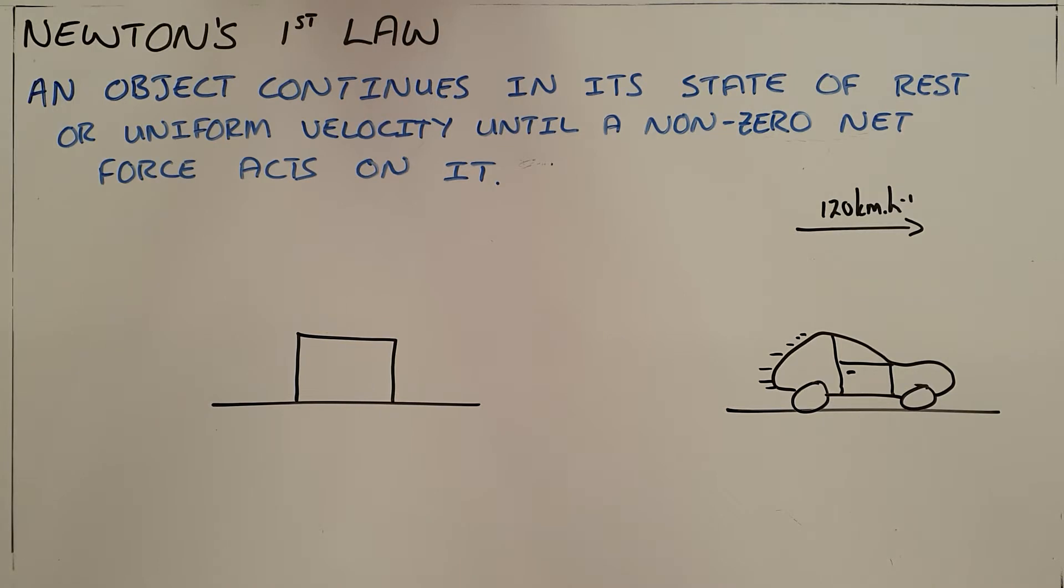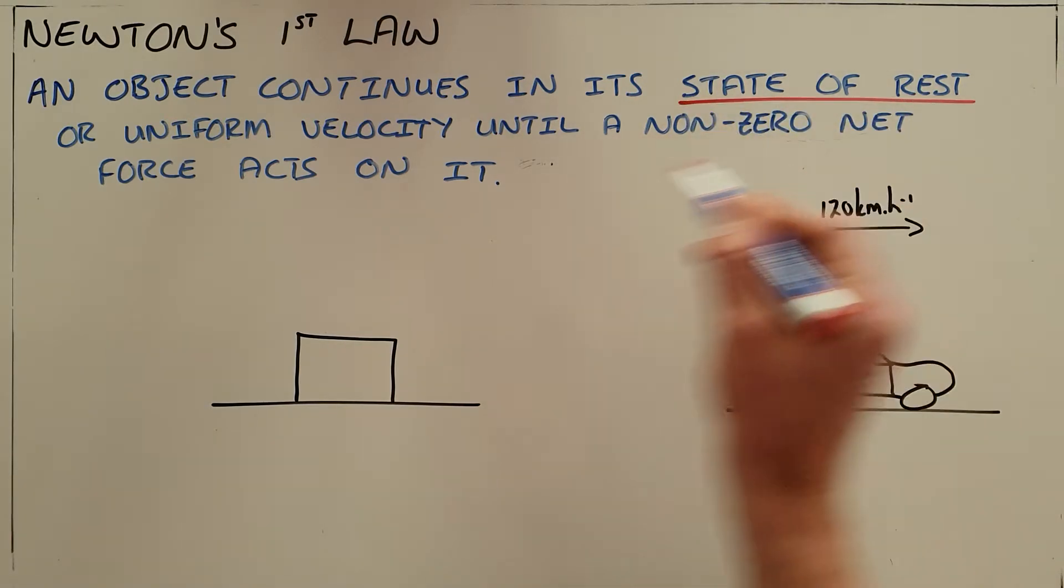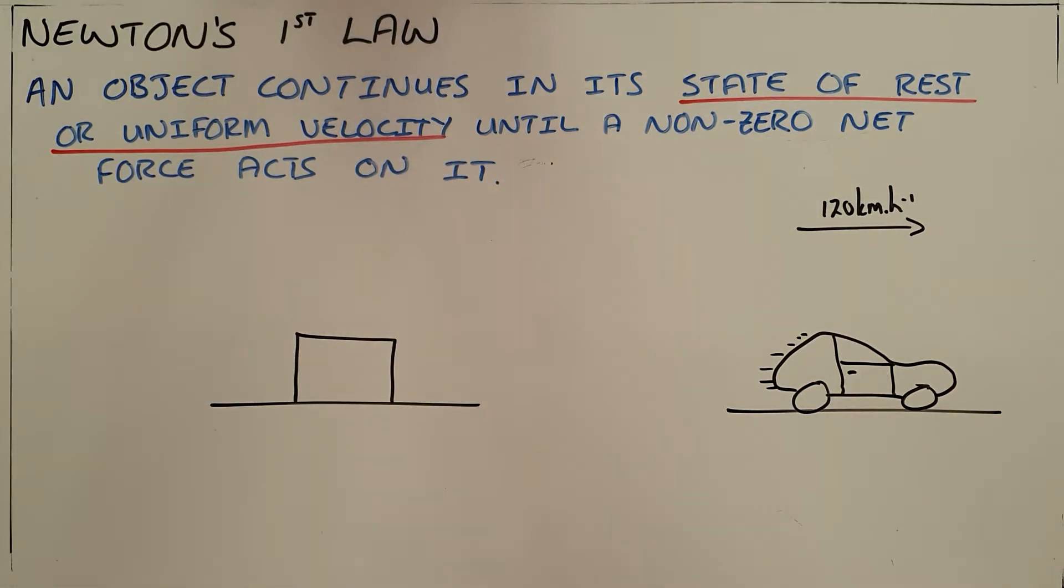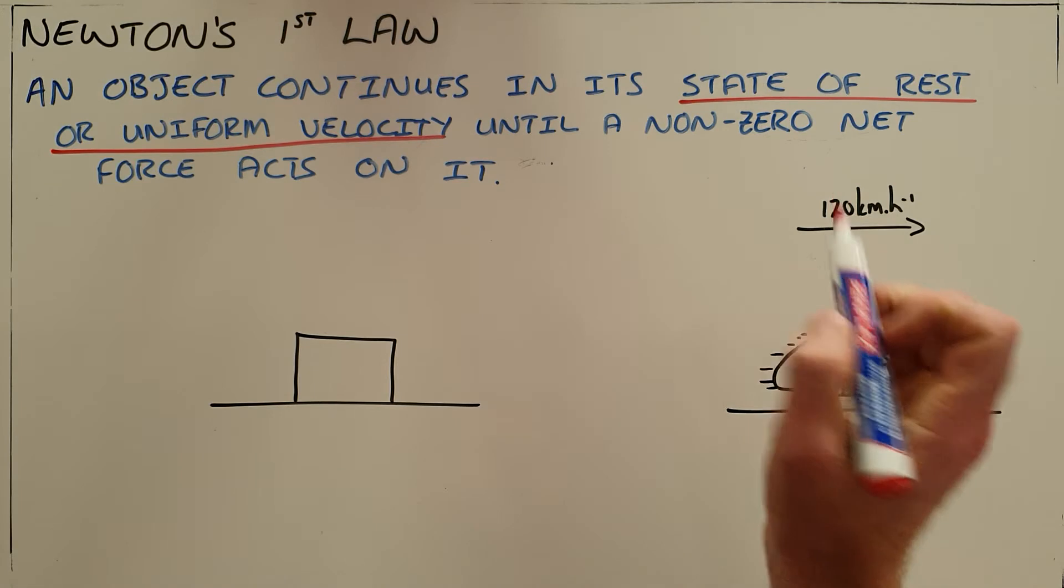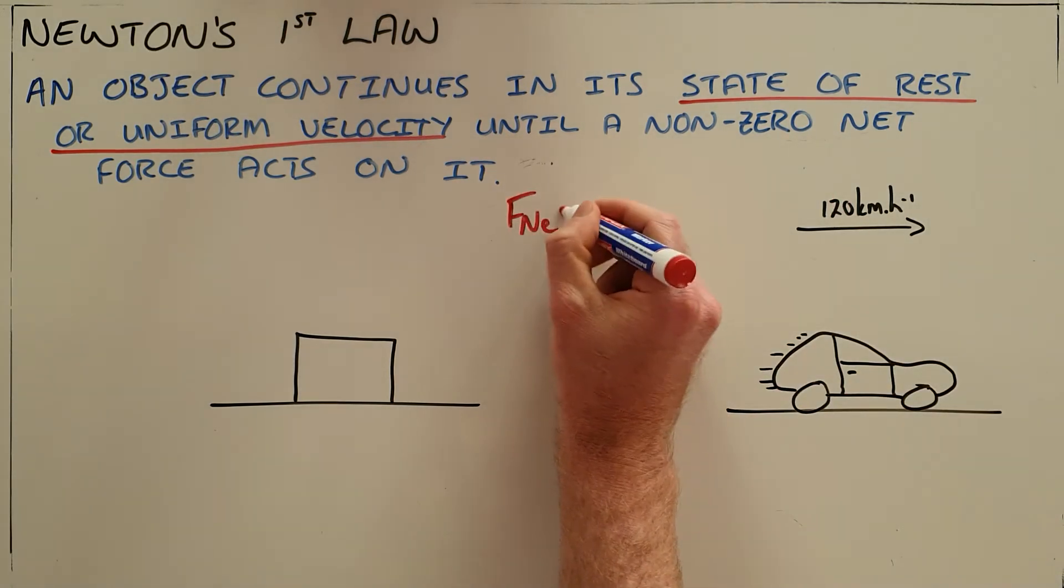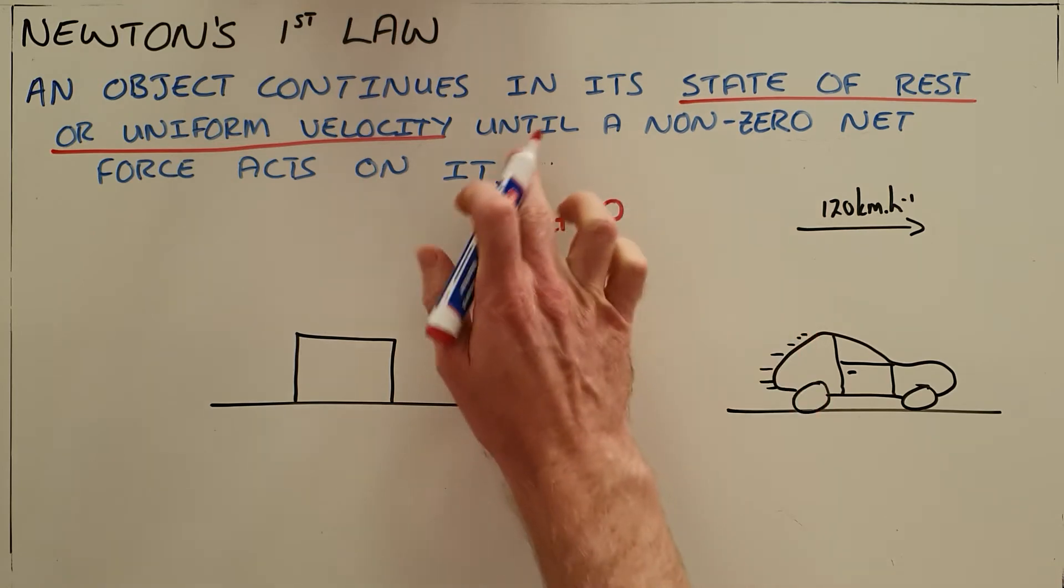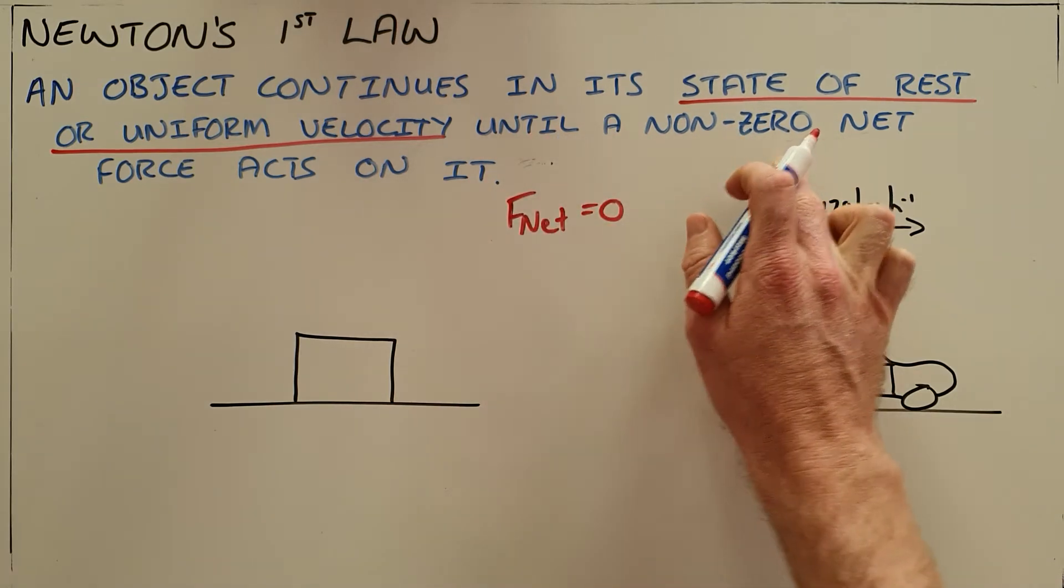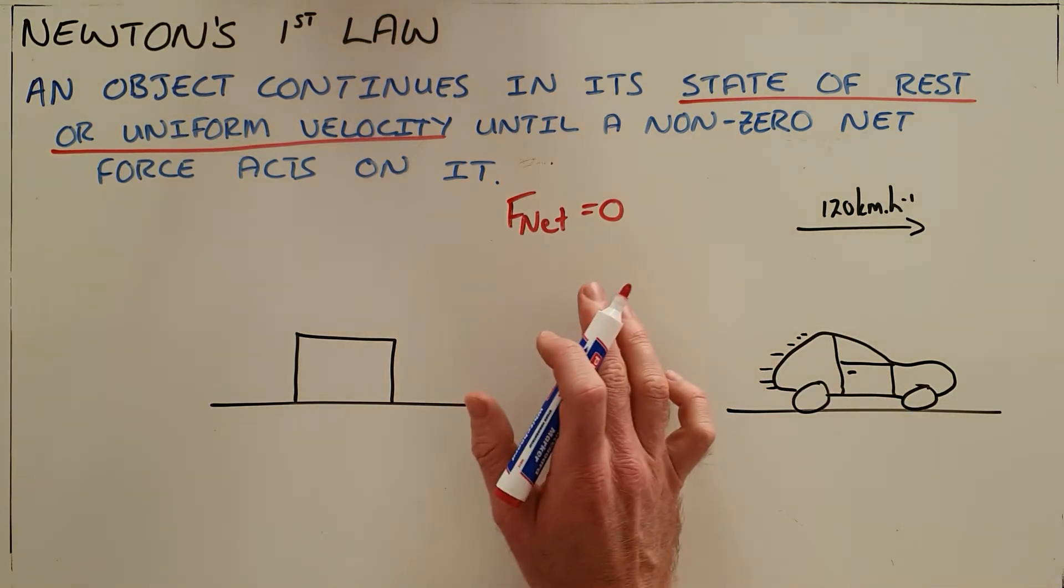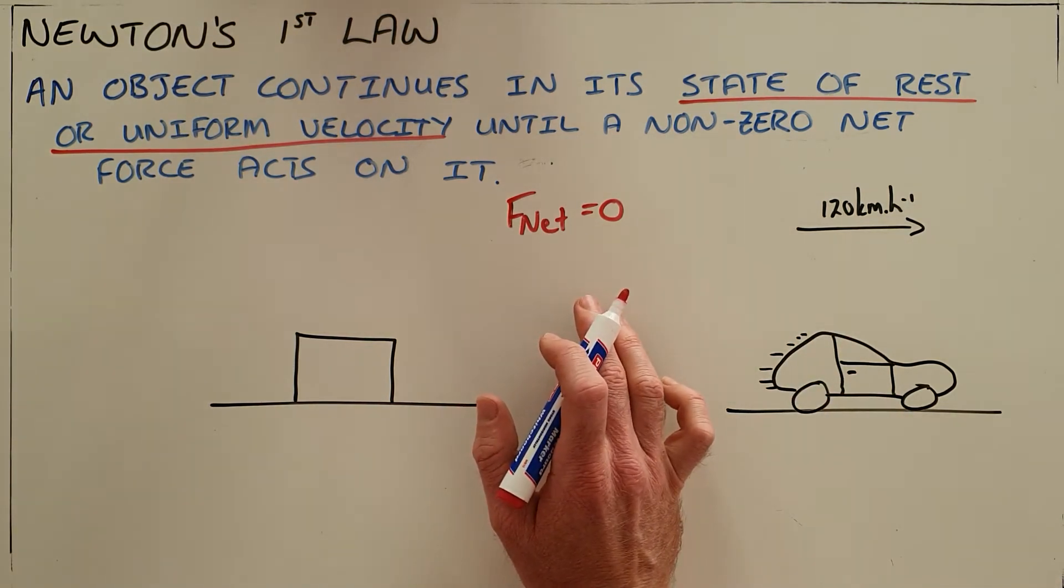The first one is the state of motion, which they have defined here as either a state of rest or of uniform velocity. So what this tells us is that when the net force acting on an object is zero, as it says here, until a non-zero net force acts on an object, that implies that the current net force is zero.